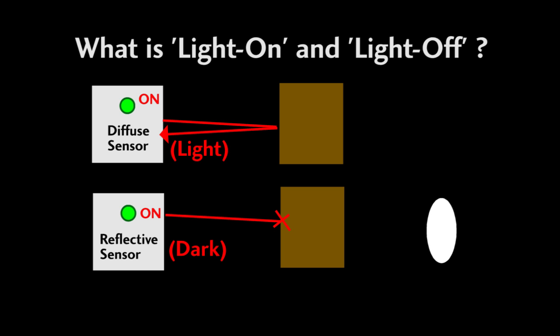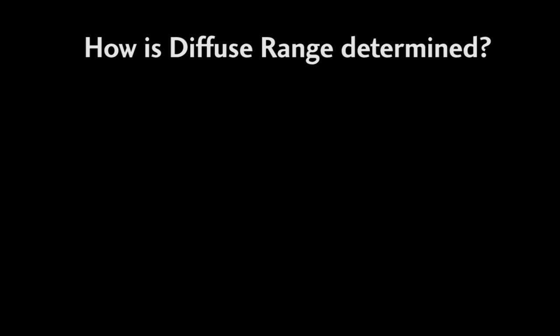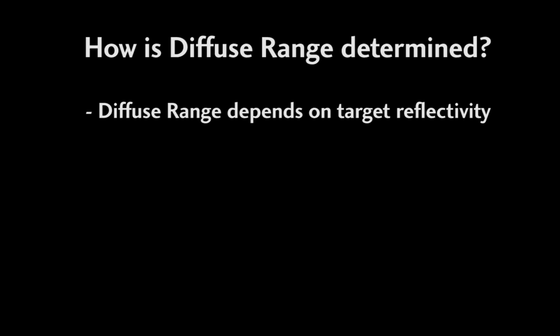Some sensors can be configured to either light-on or dark-on mode of operation. Diffuse sensor range is dependent on the reflectivity of the target. In some cases, a dark object may reflect light better than a light colored object. Diffuse sensors are specified by the distance at which they detect white card stock.